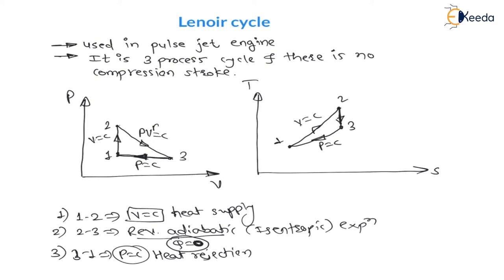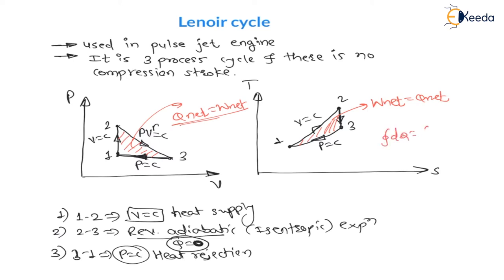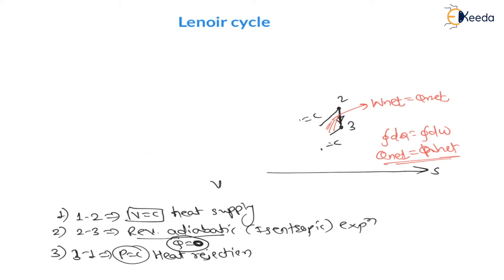From basics of thermodynamics, the area enclosed by the PV cycle as well as the area enclosed by the TS cycle is net work as well as net heat. The first law states that the cyclic integral of dQ equals the cyclic integral of dW, meaning net heat transfer equals net work transfer. Therefore, for any cycle our target is to find efficiency — and for the Lenoir cycle also, we will find the thermal efficiency.